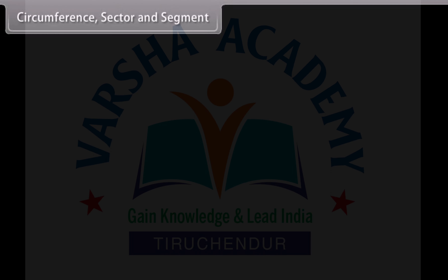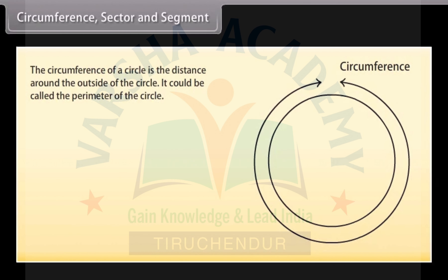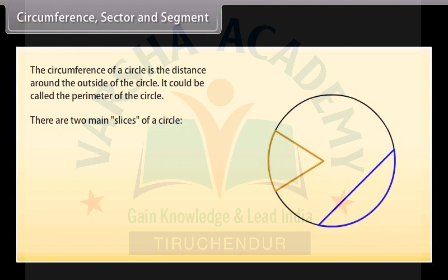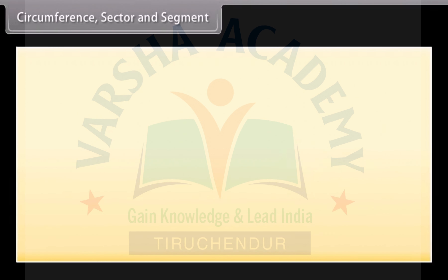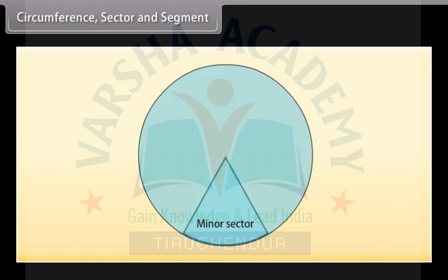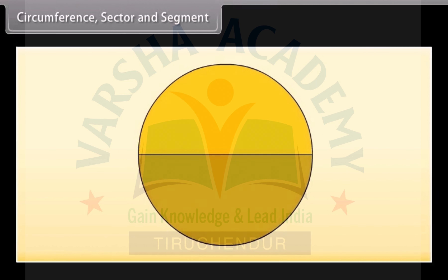Circumference, sector, and segment. The circumference of a circle is the distance around the outside of the circle — it could be called the perimeter of the circle. There are two main slices of a circle: the pizza slice and the slice made by the chord. The pizza slice is called a sector, and the slice made by a chord is called a segment. There are two types of sectors: the minor sector and the major sector. Like sectors, there are two types of segments: the minor segment and the major segment. When both arcs are equal, those are called semicircles.